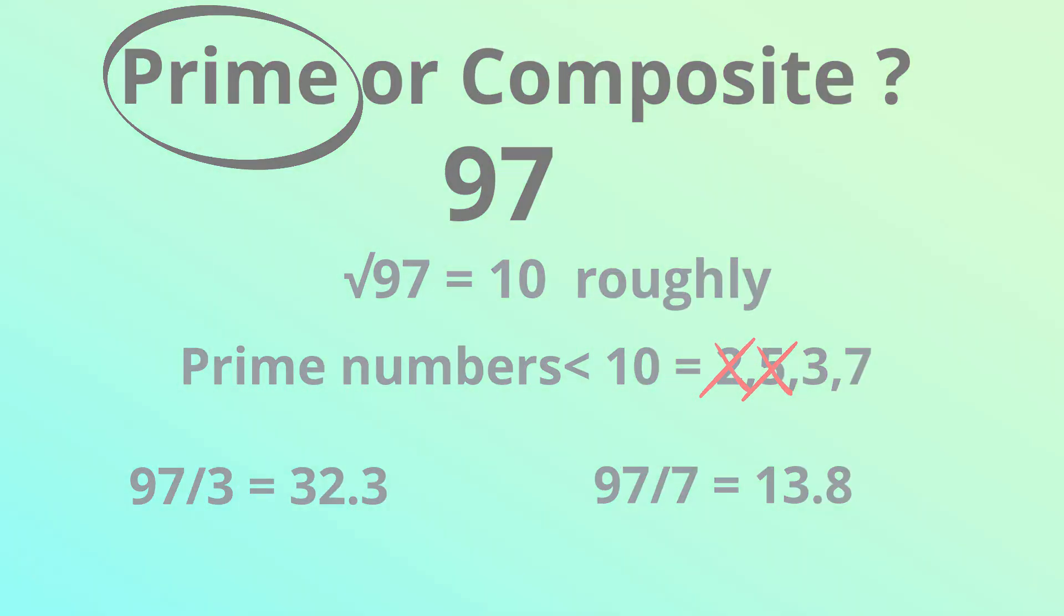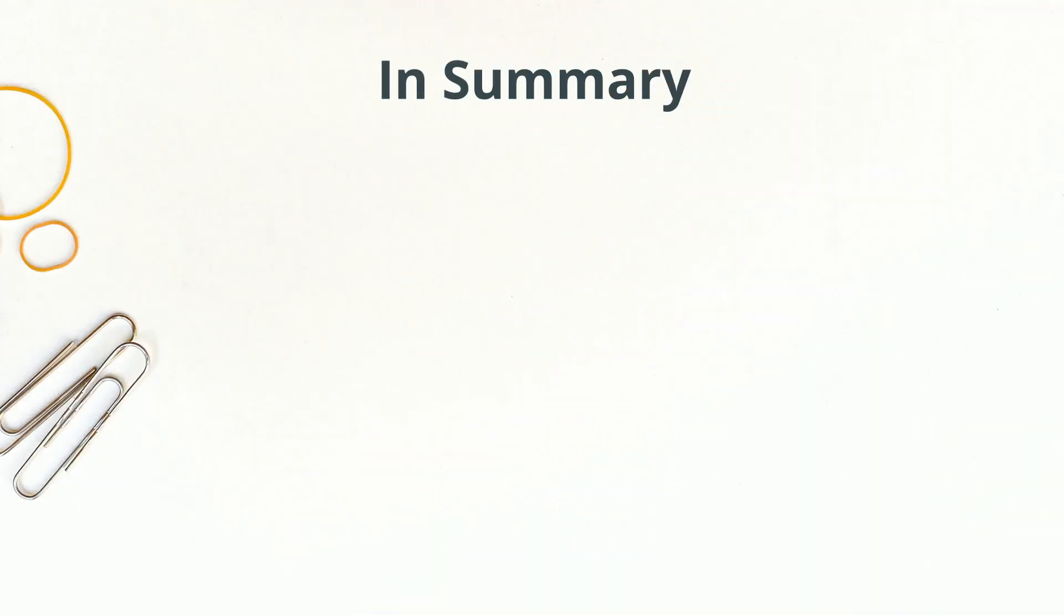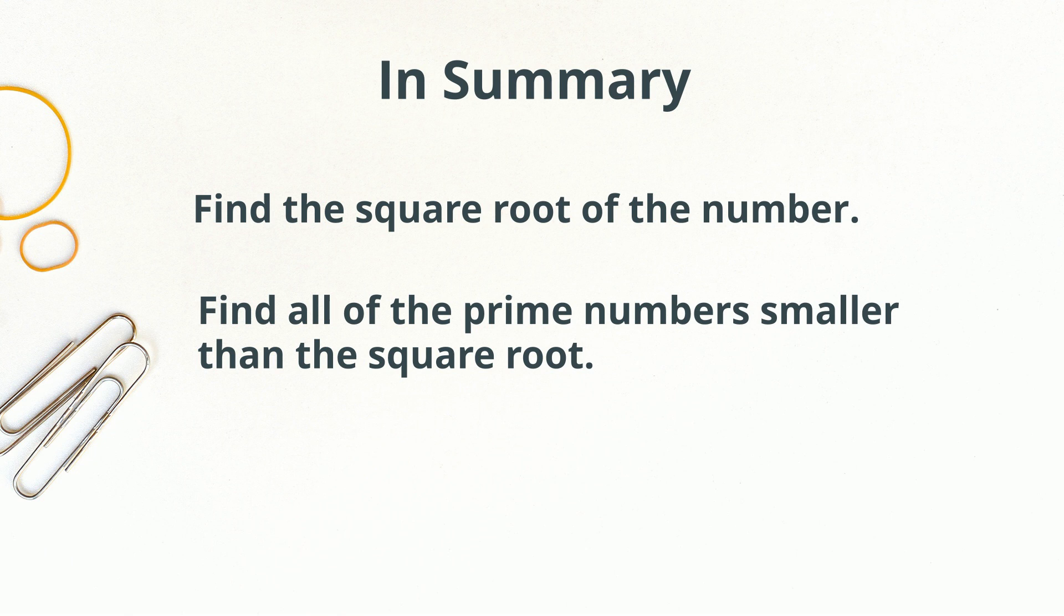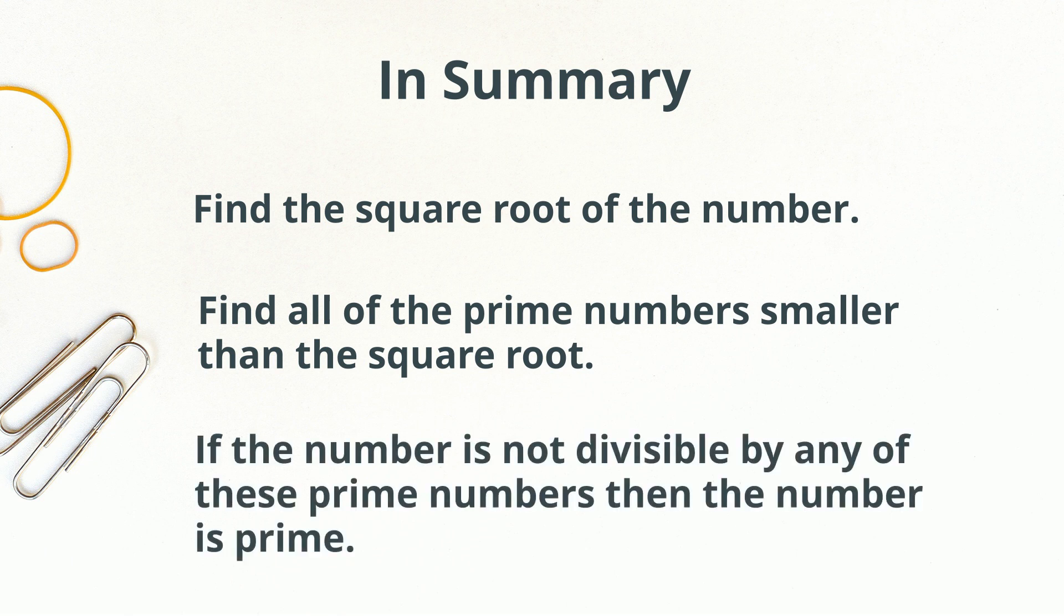So in summary, in order to find out if a number is prime, for any number find the square root, then find all the prime numbers smaller than the square root. And if it is not divisible by any of these numbers, then it is prime.